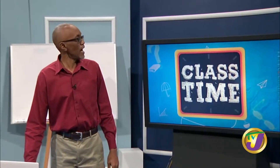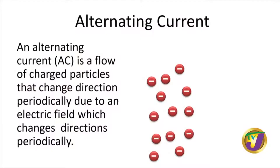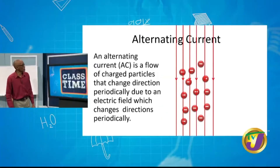In contrast, an alternating current, or AC, is a flow of charged particles that change direction periodically, due to an electric field which also changes direction periodically. So as the electric field changes direction, the charged particles also change direction.